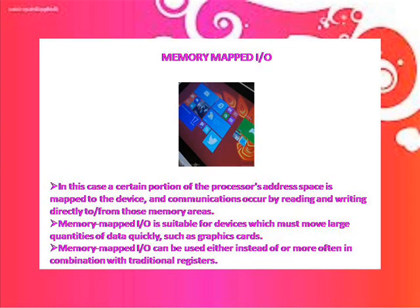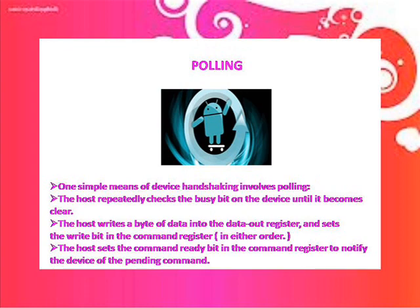Memory-mapped input and output: in this case, a certain portion of the processor address space is mapped to the device, and communication occurs by reading and writing directly to or from those memory areas. Memory-mapped I/O is suitable for devices which must move large quantities of data quickly, such as graphics cards. It can be used either instead of, or more often in combination with, traditional registers.